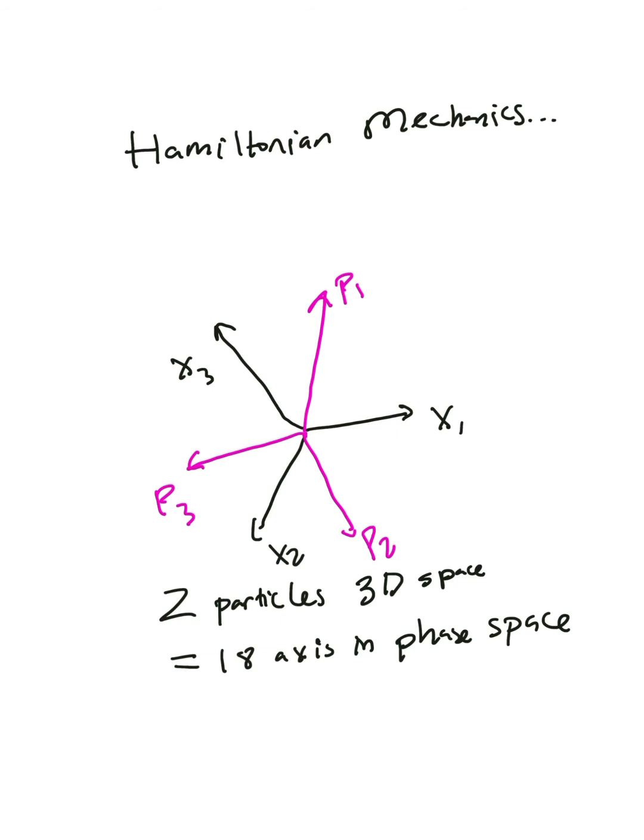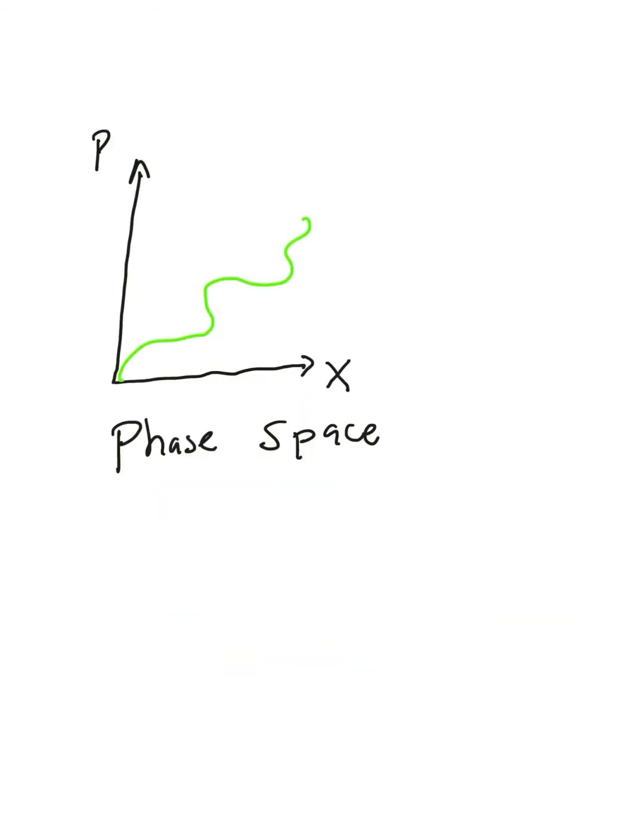Two particles in 3D space will be described by 18 axes in Hamiltonian mechanics. Again, the space gets larger when we add more axes. This new mathematical space, where we track the positions and momentum of particles, is called phase space. Phase space can be thought of as gluing the configuration space with the momentum space.